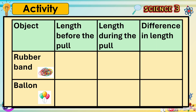Compare the objects that changed their length after pulling. Ask: 1. What was the length of the rubber band before pulling? 2. What was the length of the rubber band during the pull? 3. What was the difference in the length of the rubber band before and during the pull?